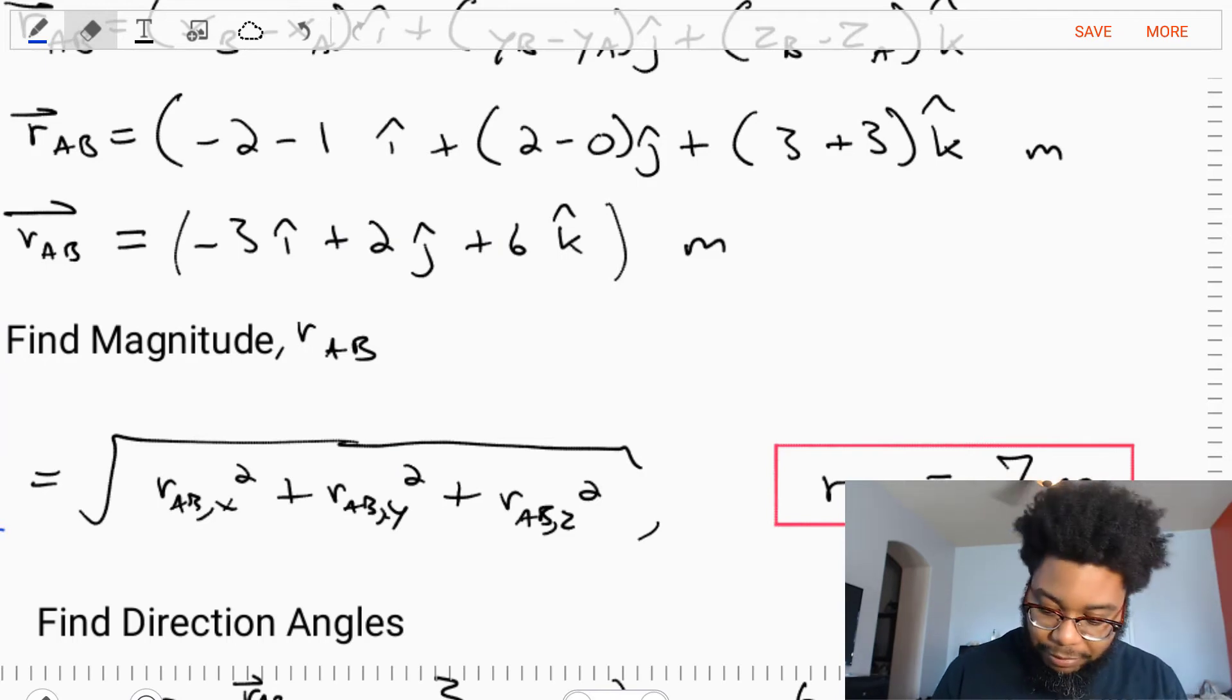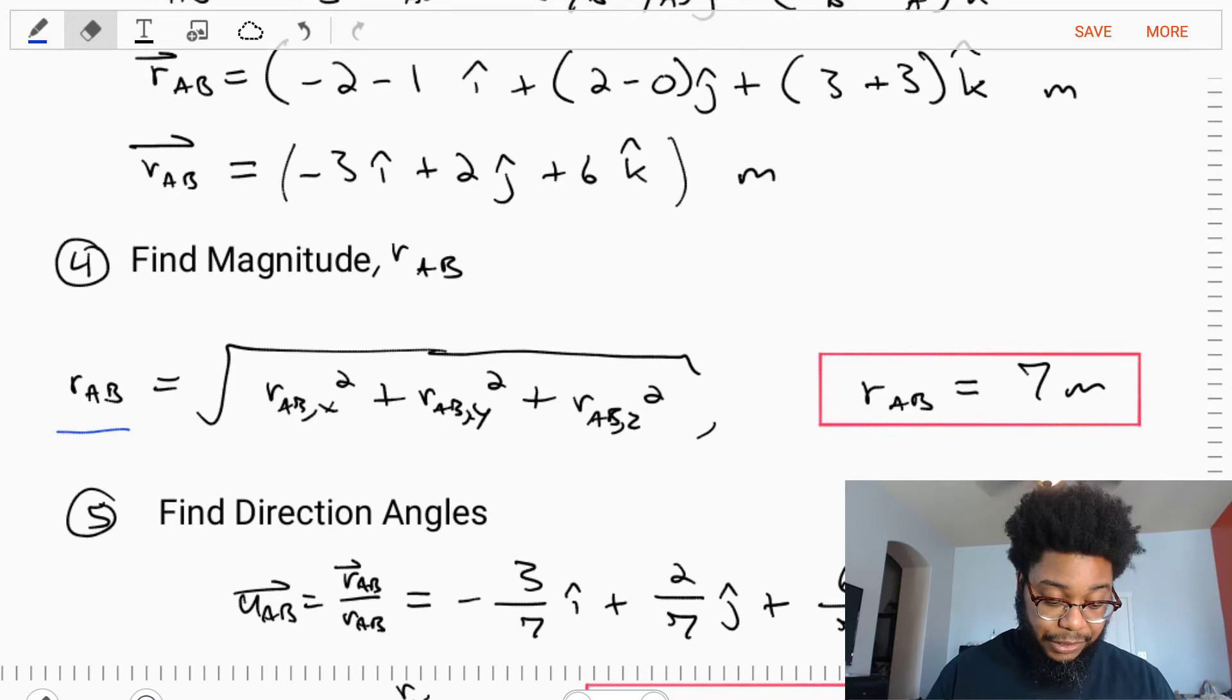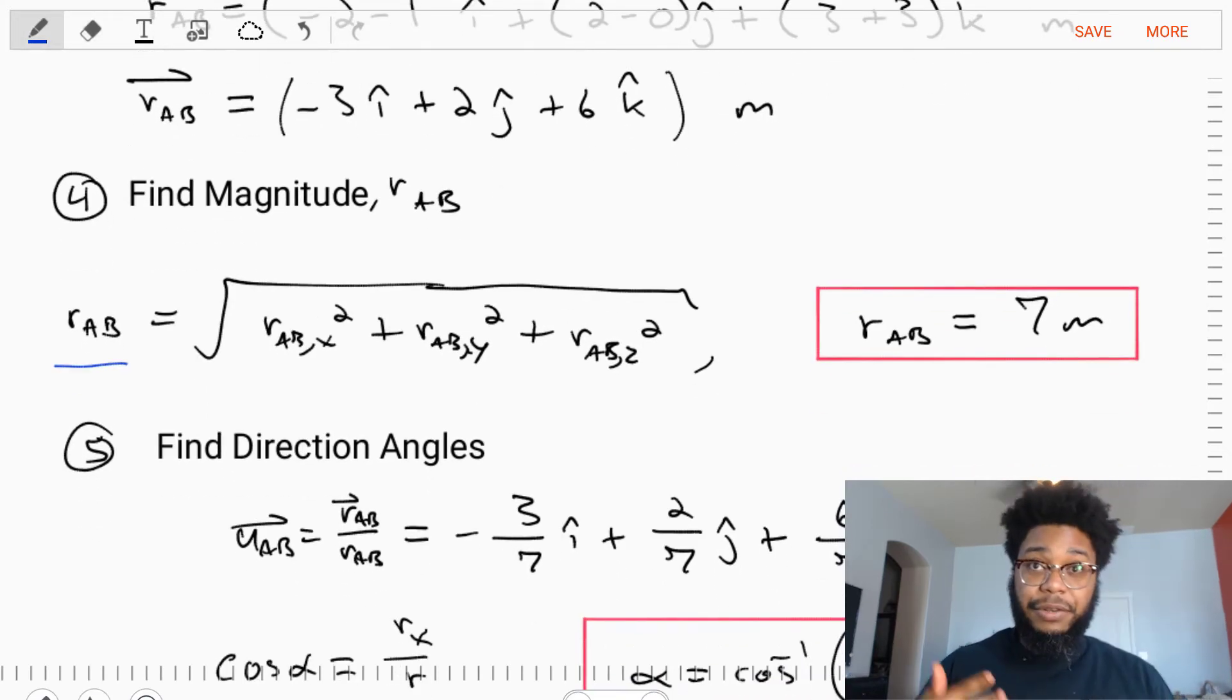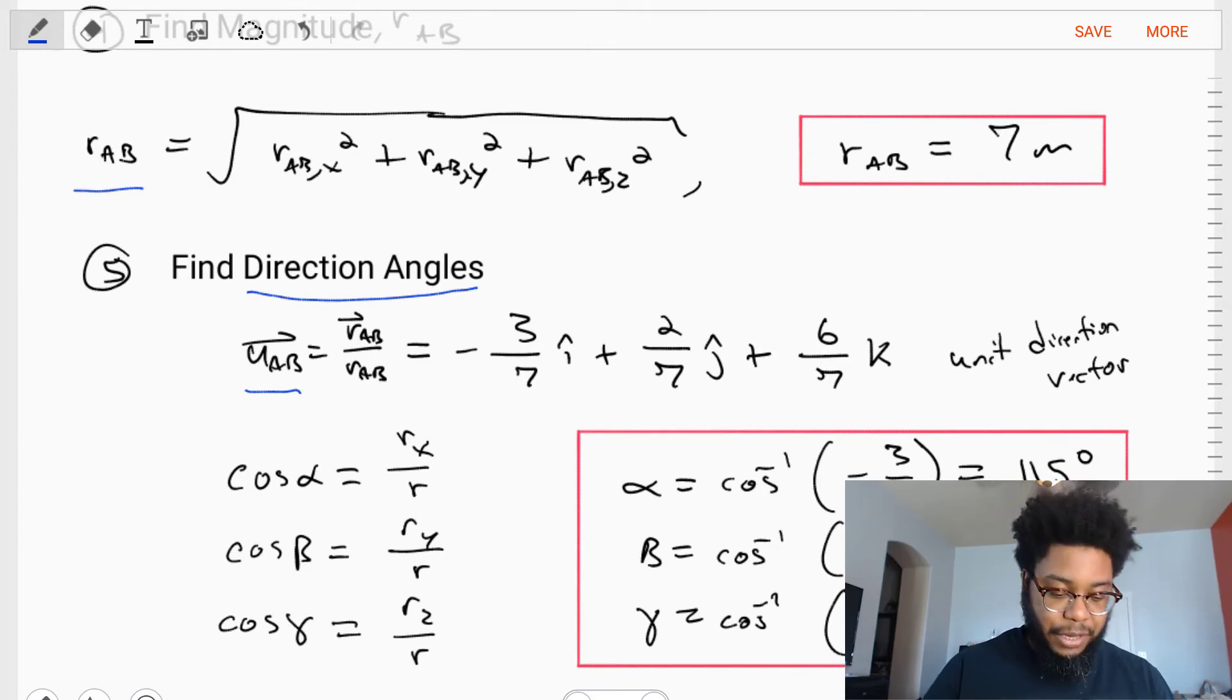The next part of this problem is to find the direction of the vector from A to B. The best method is to find either the unit direction vector itself, UAB, or the direction angles. Let's start with finding the unit direction vector UAB, which equals the vector itself divided by the magnitude. We have a Cartesian vector in the numerator and a scalar value in the denominator. Each of the terms of UAB is divided by 7.